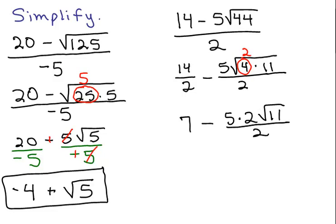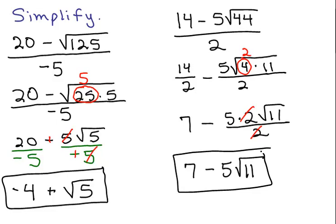So what do I have left here? I have 7 minus 5 root 11. And I forgot to do this all the way through, but remember this is equal to this, this is equal to this, which is equal to our answer. Same thing over here. Just keep in mind. And that's it. Hope that helped.